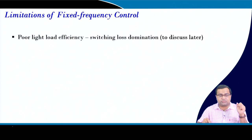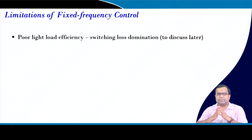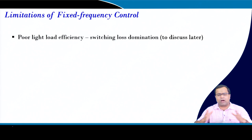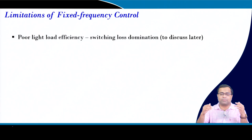But when it comes to light load - when you are talking about a power converter designed for a wide load current range where the load current can be a few milliamperes or even a few hundred microamperes up to a few tens of amperes - fixed frequency control has a limitation at light load, particularly when the converter operates in discontinuous conduction mode, because switching loss dominates and efficiency can drastically fall.